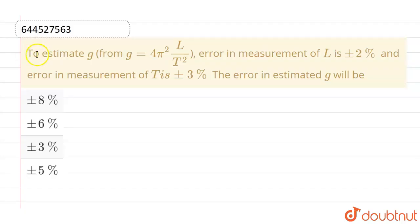Hello everyone, if we talk about this question, the given question is to estimate g from g which is given as 4π²L/T². Error in measurement of L is ±2% and error in measurement of T is ±3%. And the error in estimated g will be.